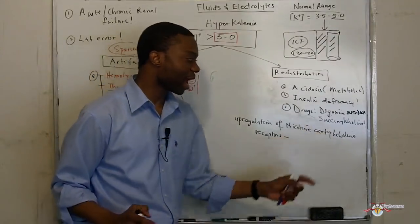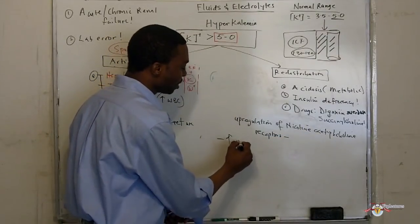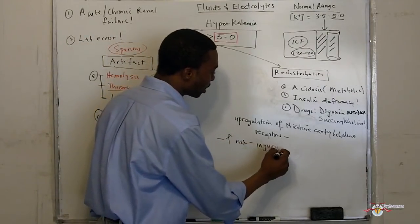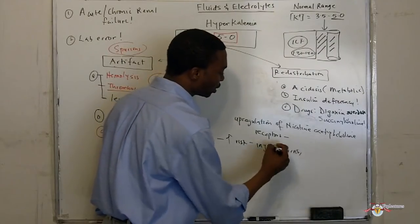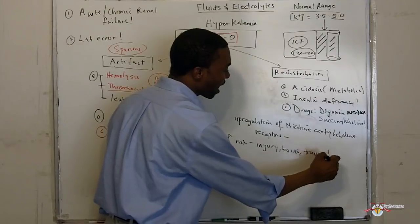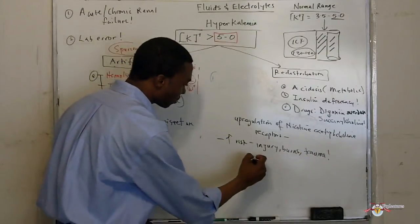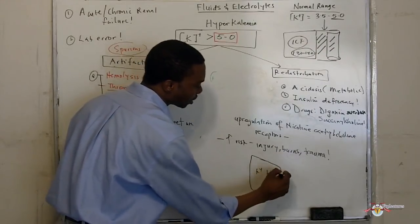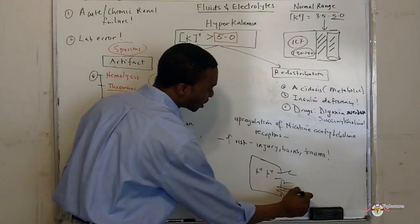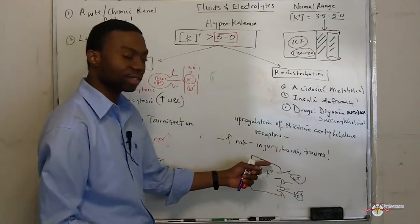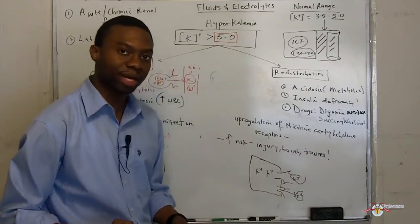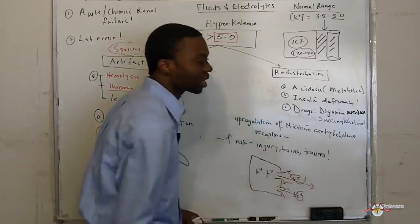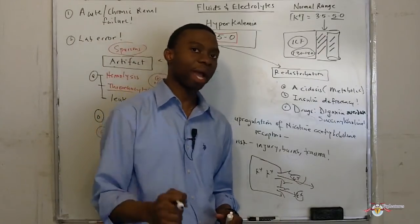Patients at increased risk of developing hyperkalemia from succinylcholine are those with injuries — burns, crush injuries, trauma. If you already have trauma, your cells that normally contain a lot of potassium are getting crushed and leaking out potassium. The upregulation of receptors on the muscle membrane then causes efflux of potassium outside into the plasma, causing hyperkalemia.